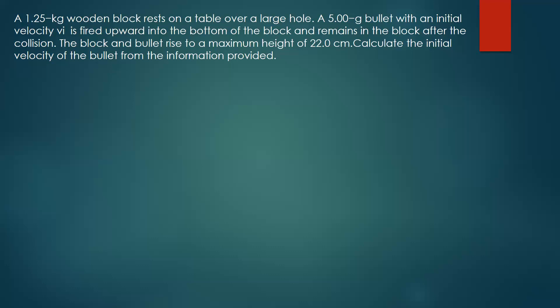When solving a physics question, the first thing you need to do is write a free body diagram. Apart from that, you need to understand the question. There are three main steps: first, write the data you've been given; second, draw the free body diagram; and third, make sure you understand the question before you start solving. The free body diagram always carries marks, so don't forget it.